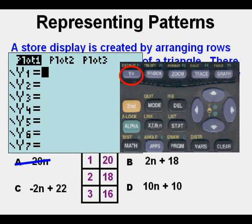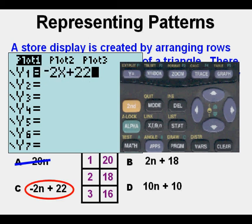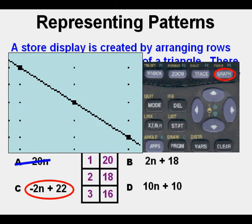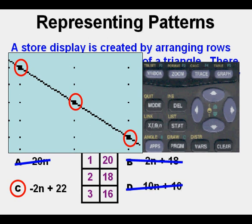If you notice, all the other choices B and D have positive slopes. We need one with a negative slope, so let's choose C. Let's enter that, and if I'm right it will fit the points. And indeed, that is the right choice. So that is our correct answer.